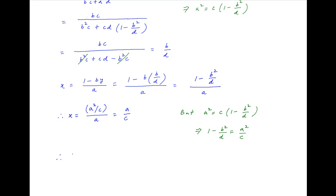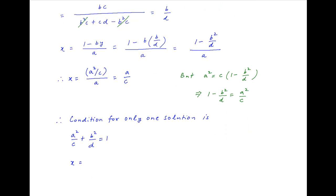Therefore, to summarize, the condition that the given set of equations have only one solution is a squared upon c plus b squared upon d is equal to 1. And if this condition is satisfied, the value of x is equal to a upon c and the value of y is equal to b upon d. And this is the required answer.